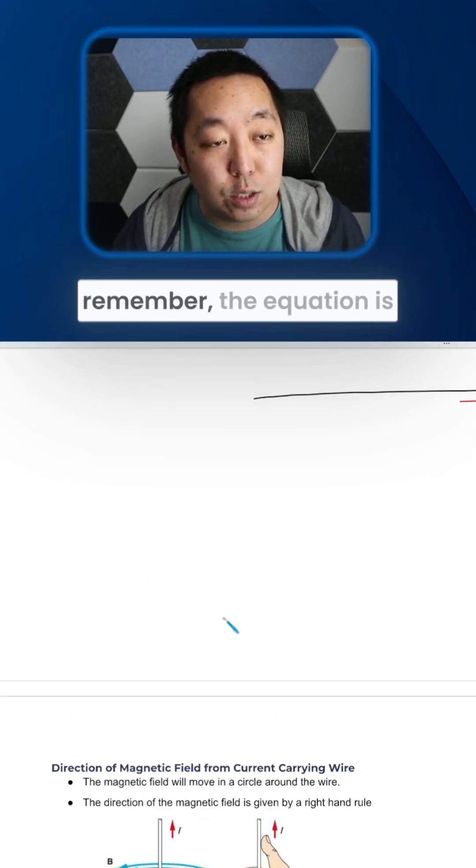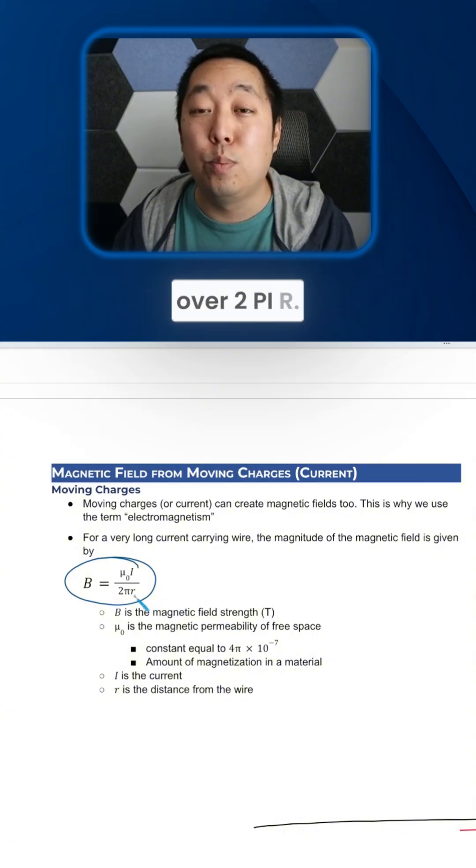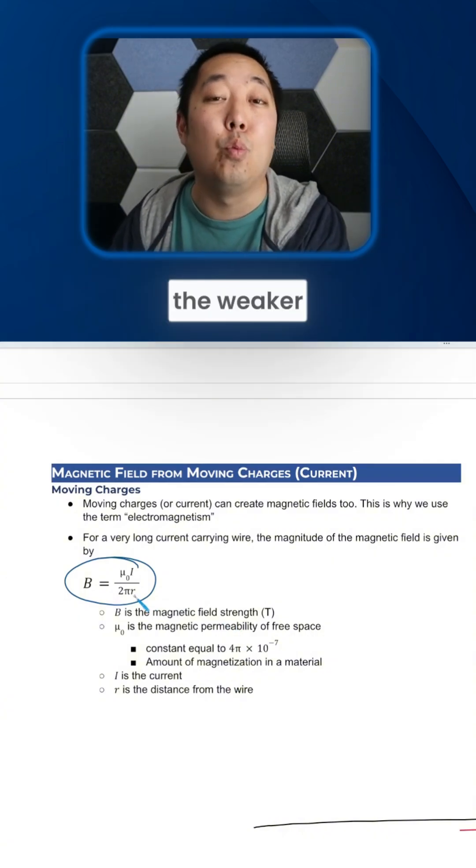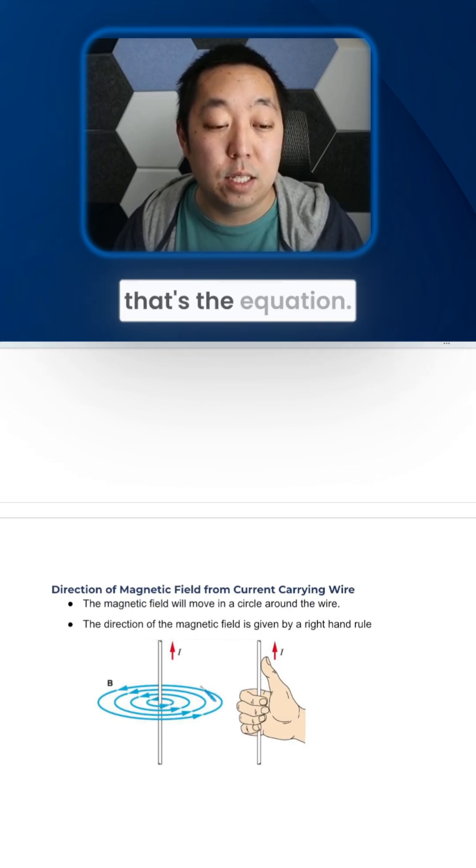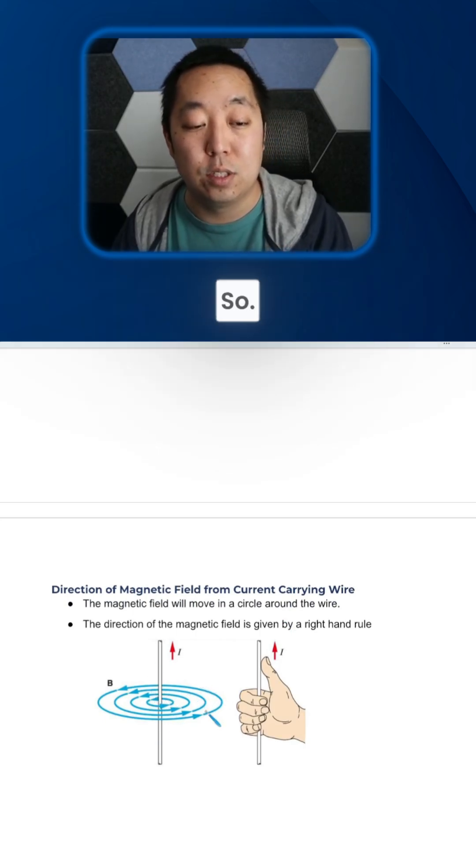Now, it is weaker as you get further away, because remember, the equation is over 2 pi r. So the further away you are, the weaker the magnetic field is. But it's equal to, that's the equation, and this is how you do the direction.